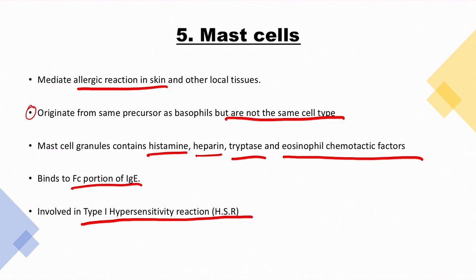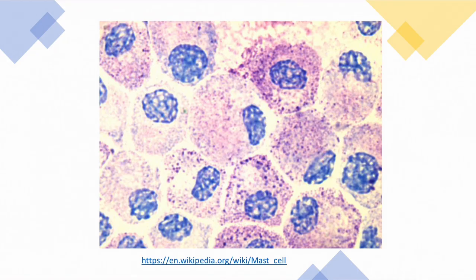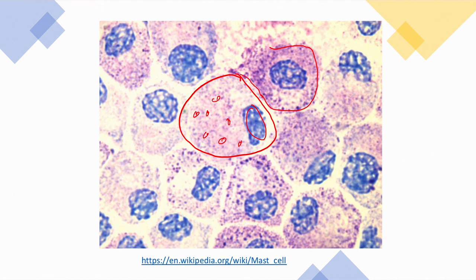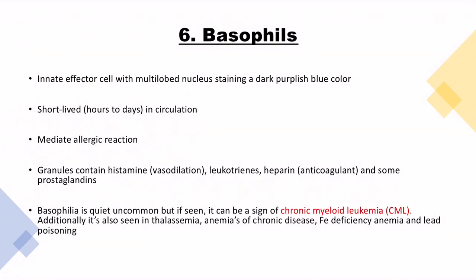Mast cells are involved in type 1 hypersensitivity reaction — there are four types of hypersensitivity reactions, and mast cells are involved in type 1. The structure of a mast cell shows a large cell with a nucleus and many granules inside. A neighboring mast cell shown is degranulating — expelling its granules to the outside.